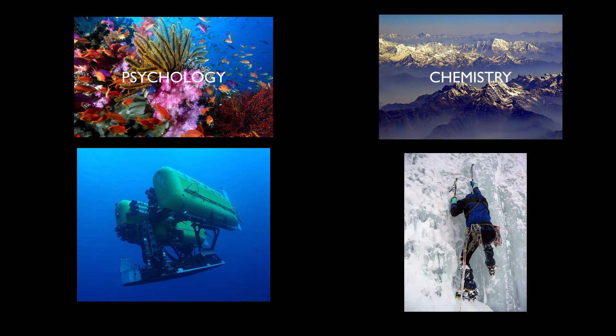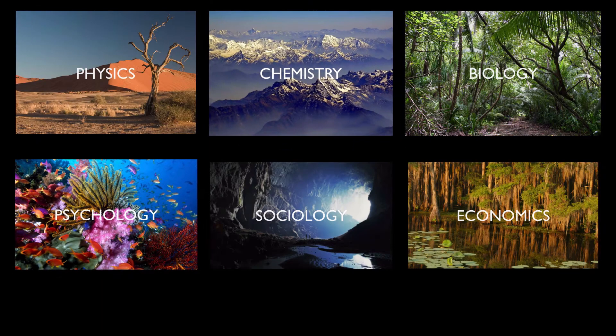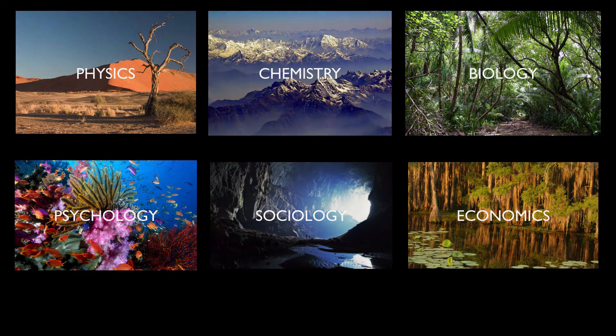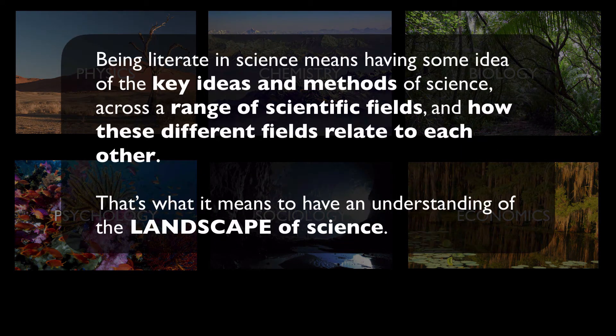Now, this narrowing of disciplinary focus is necessary to become a skilled researcher in a scientific field, but it's not conducive to science literacy. Being literate in science means having some idea of the key ideas and methods of science across a range of scientific fields, and having some idea of how these different fields relate to each other. That's what it means to have an understanding of the landscape of science.